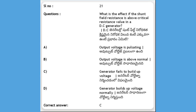What is the effect if the shunt field resistance is above the critical resistance value in a DC generator? Options: output voltage is pulsating, output voltage is above normal, generator fails to build up voltage, generator builds up voltage normally. The answer is C, generator fails to build up voltage.